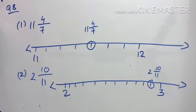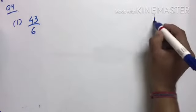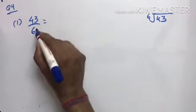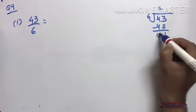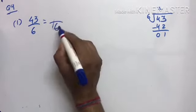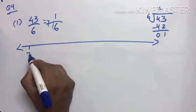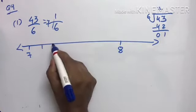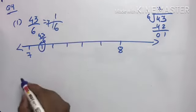If an improper fraction needs to be plotted on a number line, first convert it to a mixed fraction. Question 9: For 43/6 — divide 43 by 6: 6 sevens are 42, remainder 1 — so it becomes 7 and 1/6. Draw the number line between 7 and 8, divide into 6 parts, and mark the 1st part as 43/6.